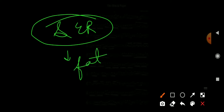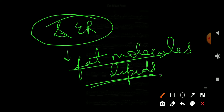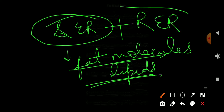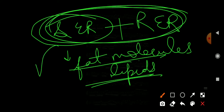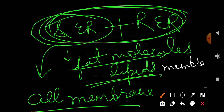Next is smooth endoplasmic reticulum. The smooth endoplasmic reticulum helps in the formation of fat molecules — lipids. Both smooth endoplasmic reticulum and rough endoplasmic reticulum together help in building the cell membrane. This is known as membrane biogenesis.